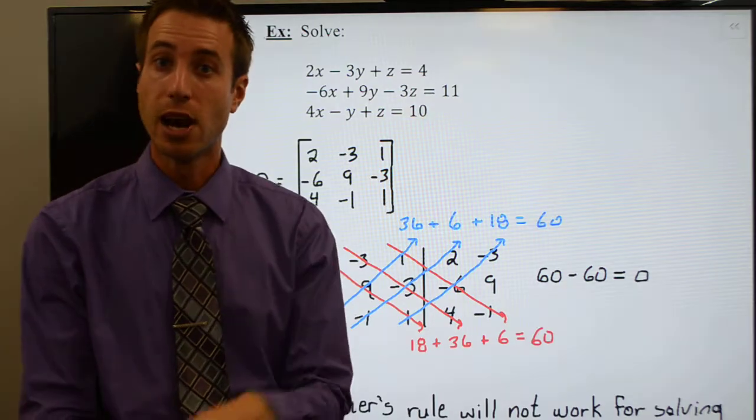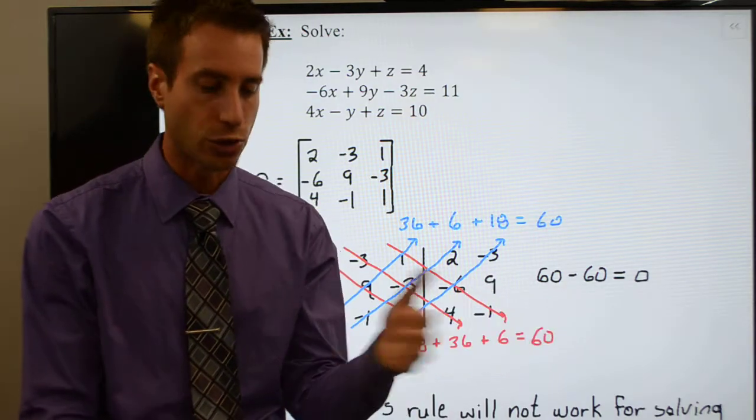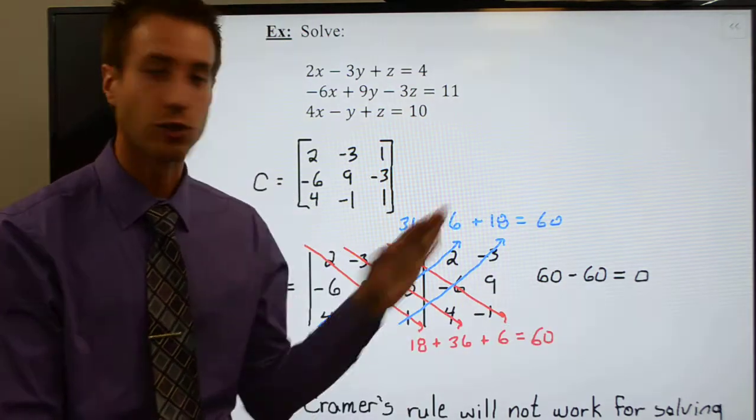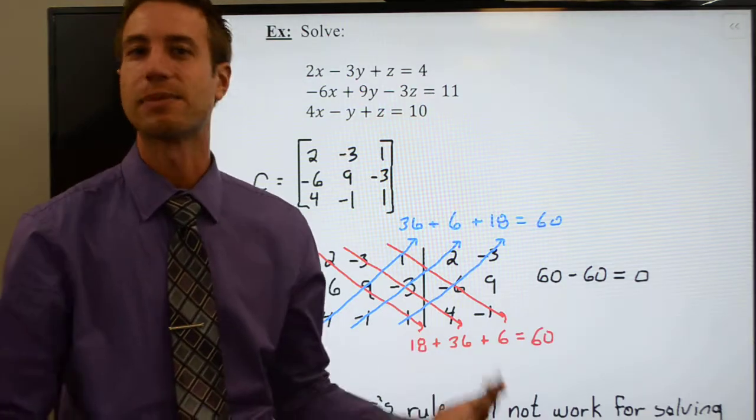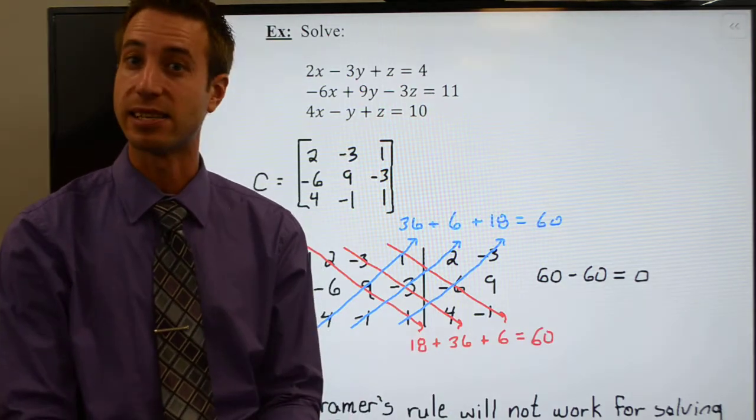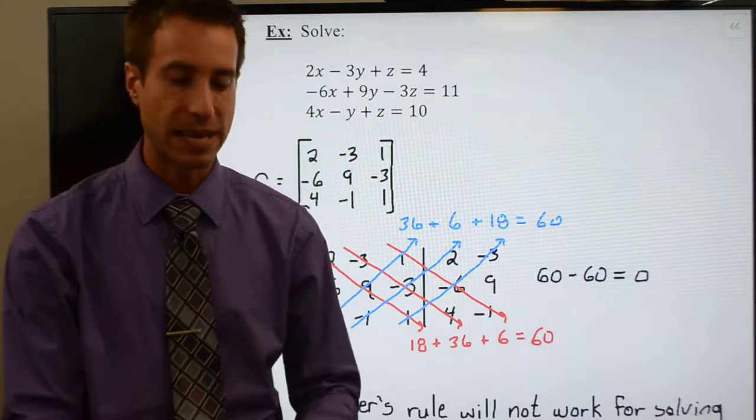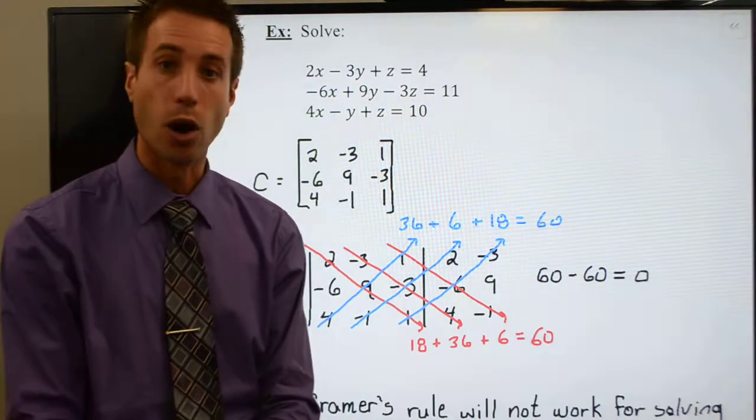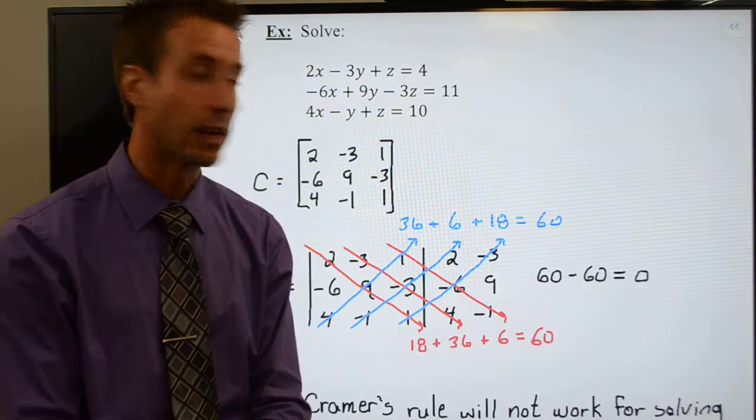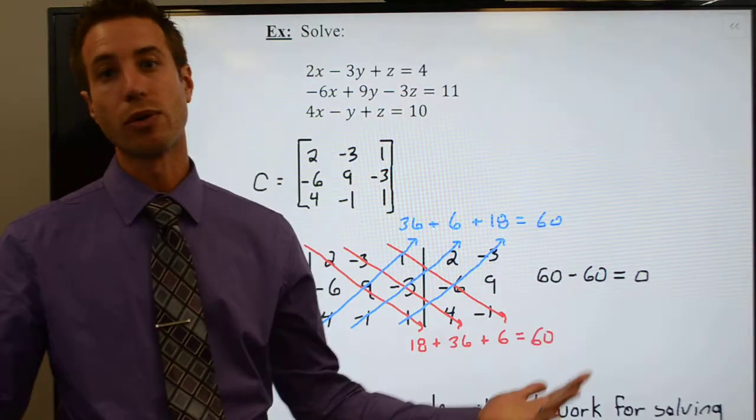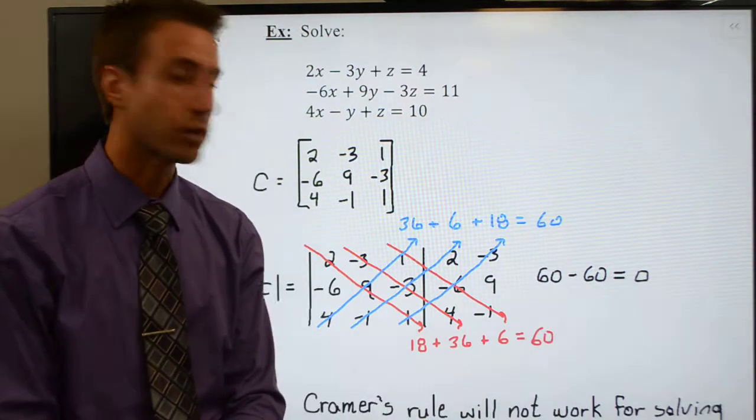And you know that you're going to get a solution that is either infinite number of solutions or no solution. Since Cramer's rule didn't work, the system cannot be consistent and independent. It must be either inconsistent or consistent and dependent, meaning all the equations are the same or they don't ever intersect each other. It's got to be one of those two.